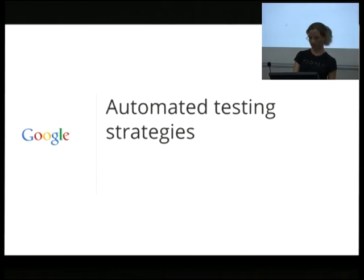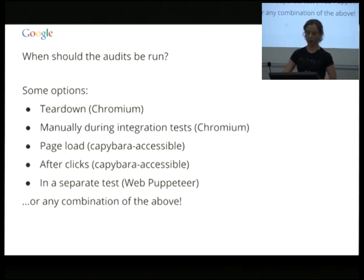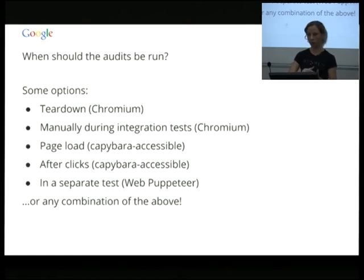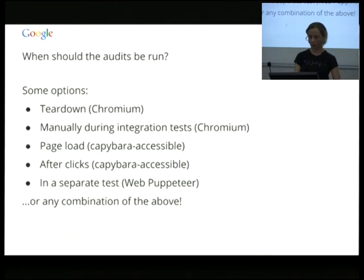Quickly looking at actual strategies we can use. First, decide when are you going to run these audits. In Chromium, the way we use it: if you've looked at the Chromium settings pages or the new tab page, that's all written in HTML so we can use this tool on it and we do. The way we run it is every test that we run, it is run on tear down — whatever state you have in the page at that time, it runs the audit on the state your test has left the page in. You can also call a hook to run it manually during a test if you've done something that's going to change the state of the UI.